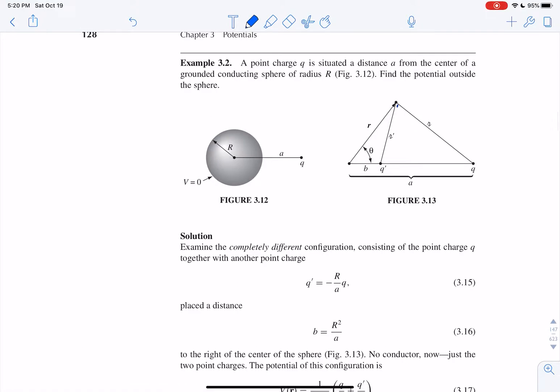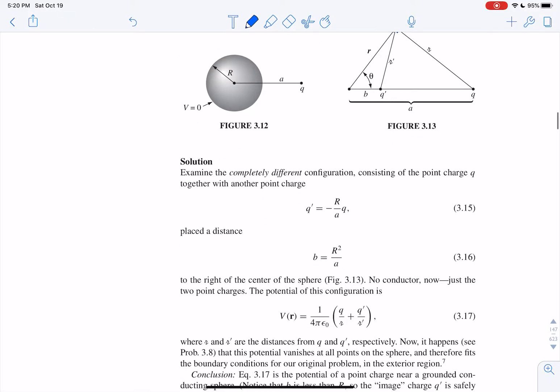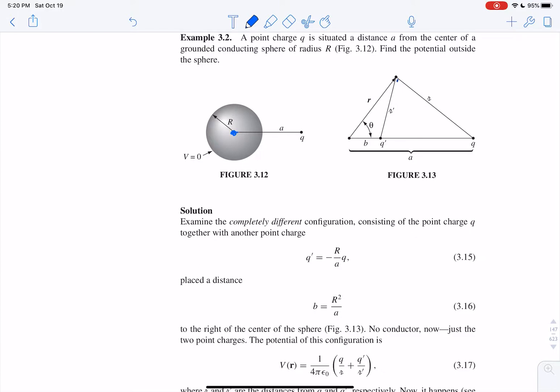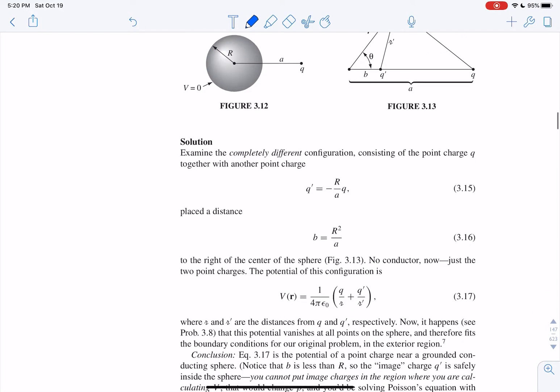So other image problems, another example is a charge, a distance a from a sphere, a grounded conducting sphere, what's the potential outside the sphere? And then what you do is you imagine that there's actually another charge, q prime, somewhere between 0 and a, and it's probably not on the surface but somewhere else, and that will give you, so you can imagine that this is equivalent to a charge somewhere here. And that's what your appropriate image charge is.